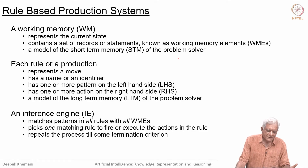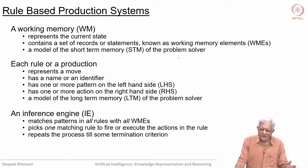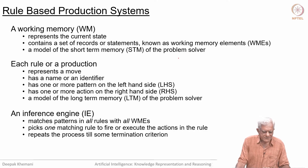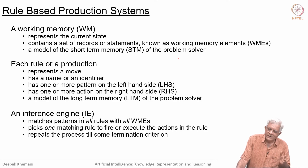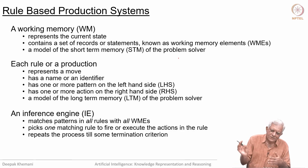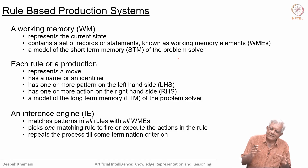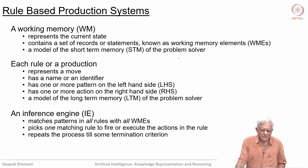We need an inference engine — that is the third component. An inference engine is the program that matches patterns in all the rules with all the working memory elements. At any given point it looks at the set of all rules, looks at the set of all working memory elements, and determines which ones match. From the ones that match, it picks one matching rule and executes — or fires — the actions in that rule. Once it does that, it may change the working memory, trigger some action outside, or even terminate the program. Then it goes back and matches all the rules with all the data and chooses the next action. That is what the inference engine does: it does a cycle of match, resolve, and execute.